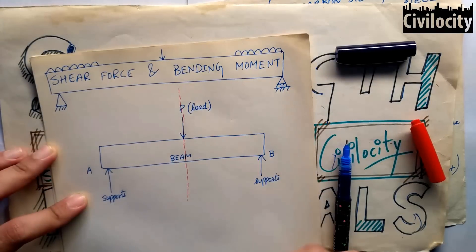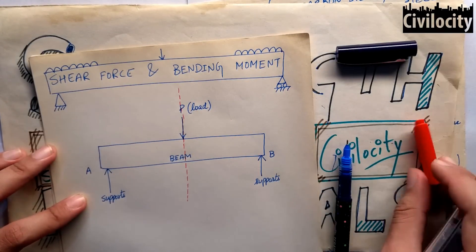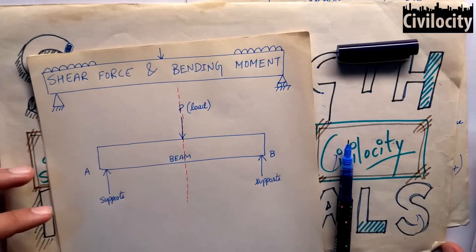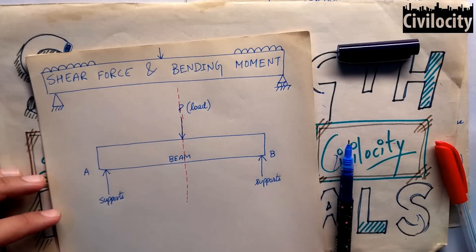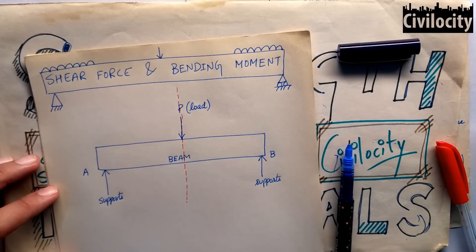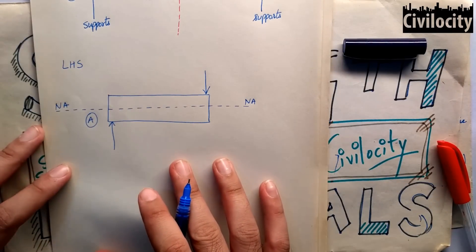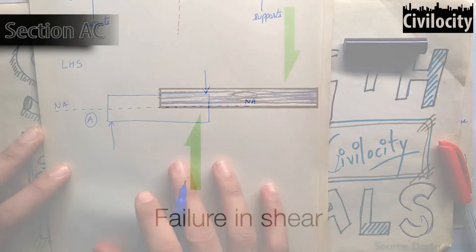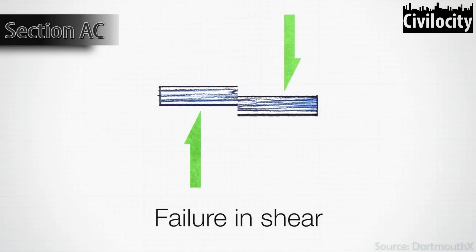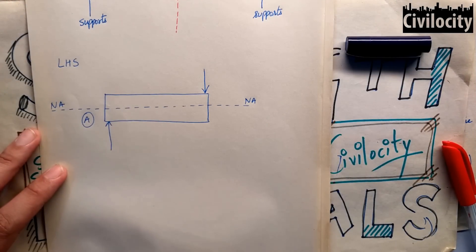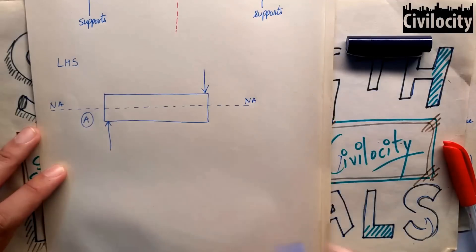Let's take any beam such as a simply supported beam, on which a point load is acting at the center. For your clear understanding, I am going to analyze this beam into two parts. So let's draw a line at the center. On the left hand side, you can see that there is a force acting upwards on the left and there is a force acting downwards on the right. These forces are acting normally to the neutral axis, creating a situation of shearing.